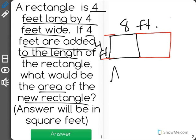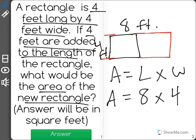So when we find the area, we multiply length times width. The length of our new rectangle is eight feet, and the width is four feet. So the area is eight times four, or 32 feet squared.